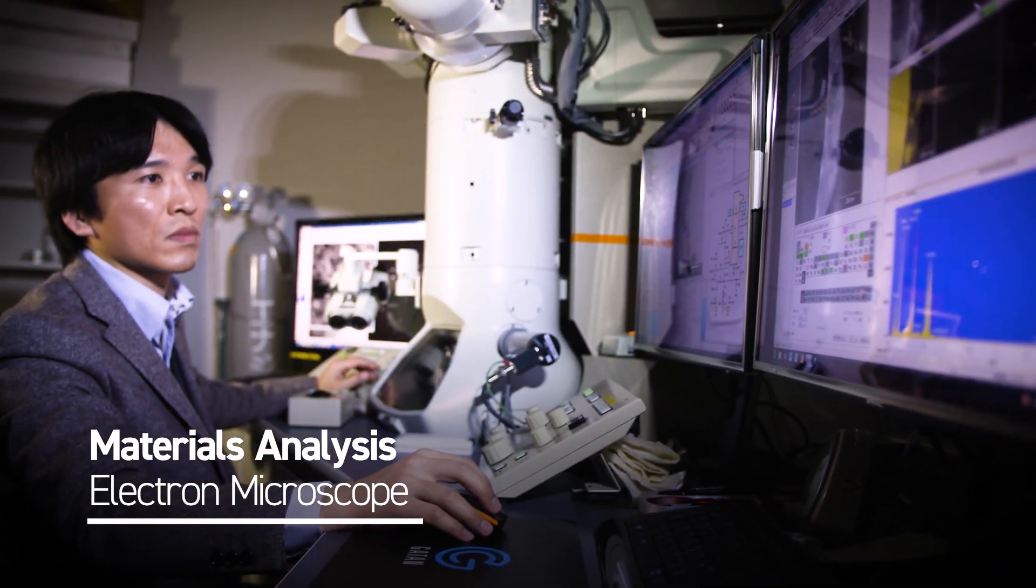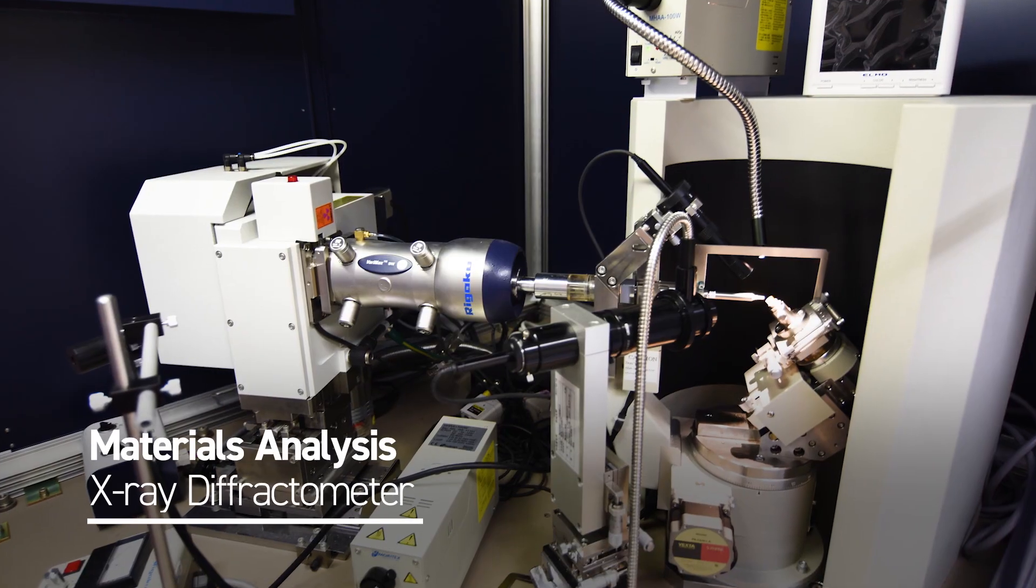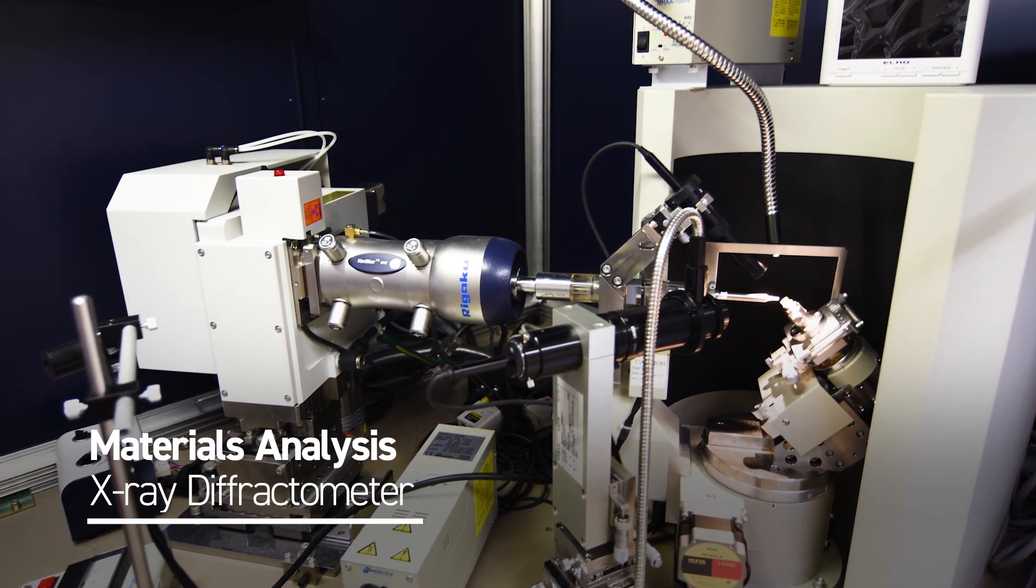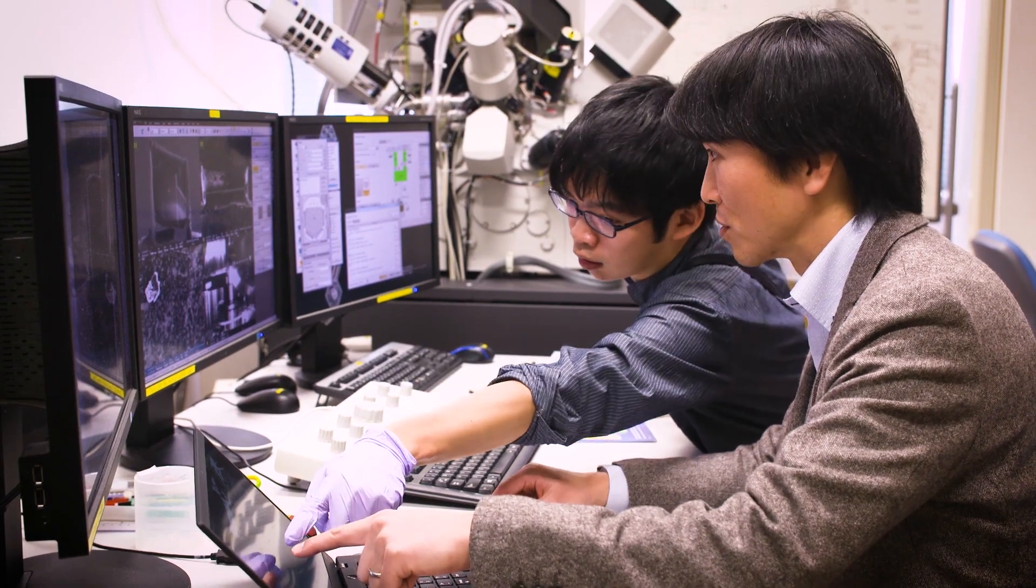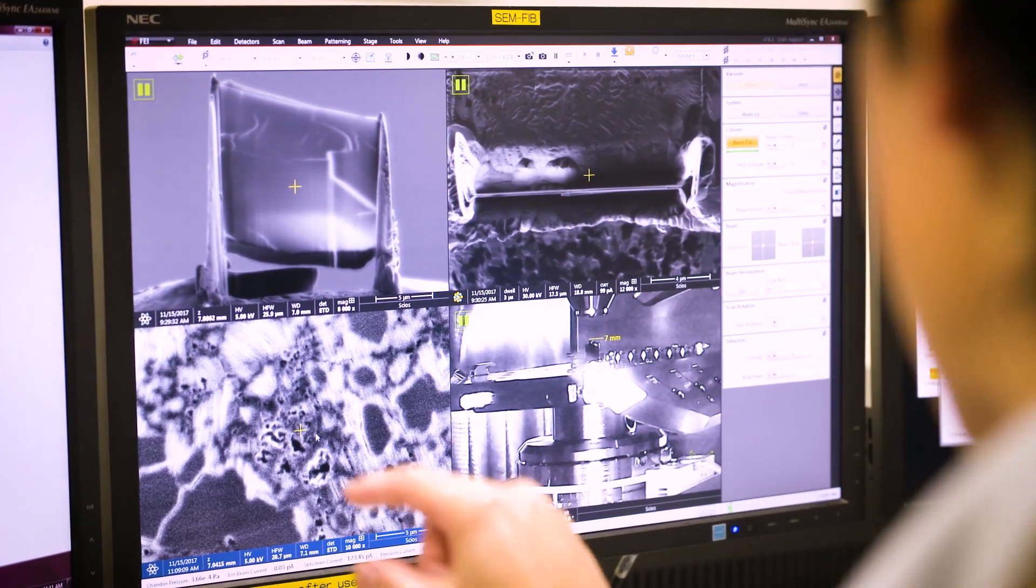Materials synthesized under high pressure and high temperatures are recovered to ambient condition and analyzed. We use electron microscope, microfocus X-ray diffractometers, and infrared spectroscopes, and more, to identify the mineral phases, and observe the microstructure and chemical compositions.